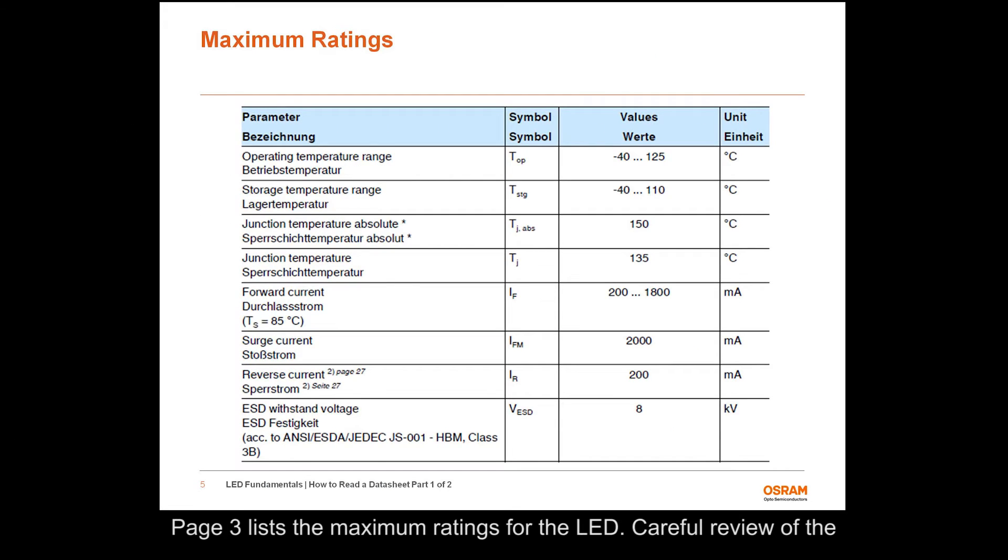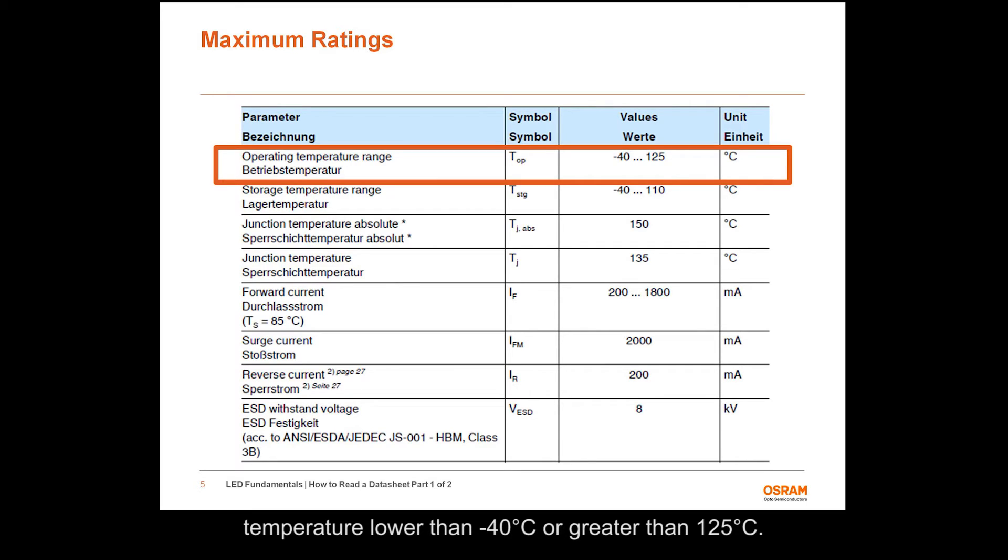Page 3 lists the maximum ratings for the LED. Careful review of the system design should be conducted to ensure that the LED is never operated outside of the values listed on this page. In this datasheet, it can be seen that the LED should not be exposed to an operating temperature lower than minus 40 degrees C or greater than 125 degrees C.